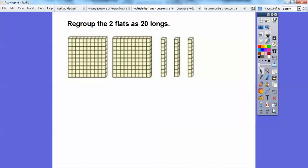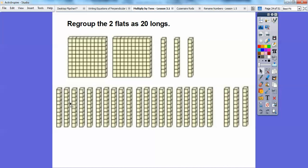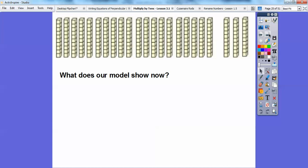So if we regroup the 2 flats as 20 longs, here's 2 flats right here. These 2 flats as 20 longs, and then we're going to have these 3 longs right here. So there's my 20 longs right there plus the 3 longs right there. So what's our model show us right there? How many longs is that? There's 23 longs in there or 23 tens.